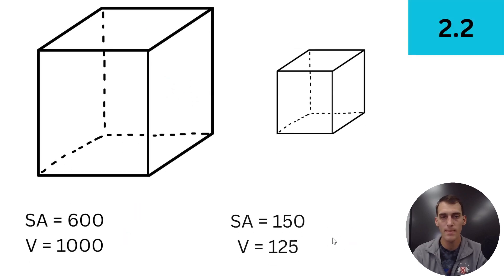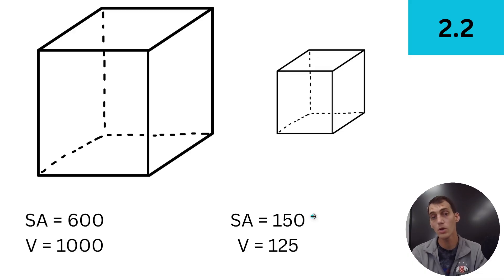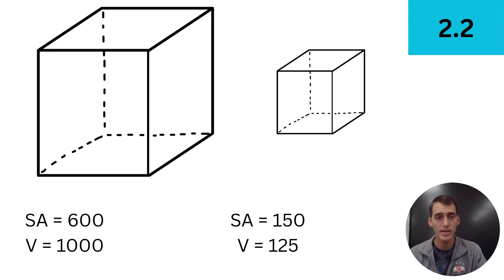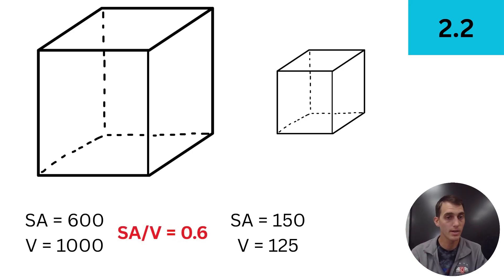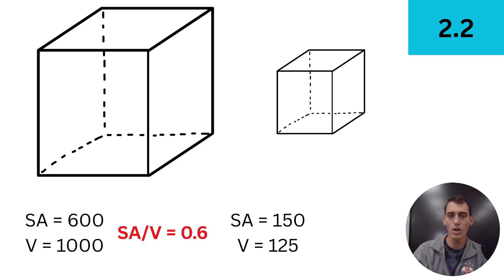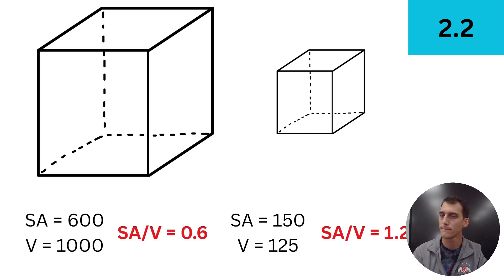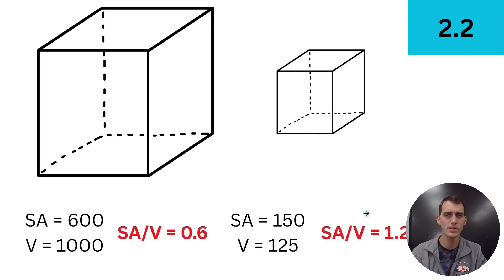The surface area of the larger cube is 600, volume is 1,000. For the smaller cube, surface area is 150, volume is 125. The higher the surface area to volume ratio, the better the cell is at exchanging materials with its environment. Calculating surface area divided by volume: the larger cell (10 μm) has a ratio of 0.6, while the smaller cell (5 μm) has a ratio of 1.2. So half the side length means twice the surface area to volume ratio. Interesting.